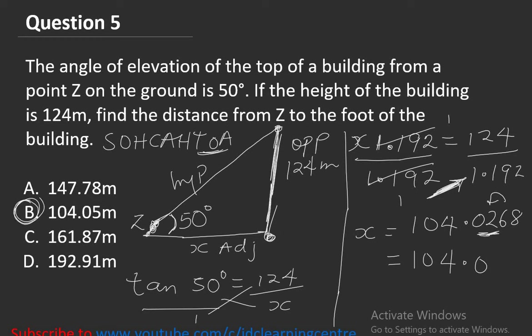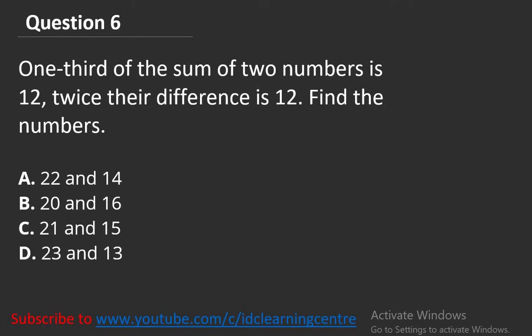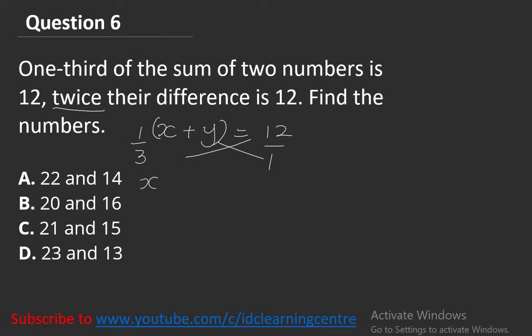Question number 6: One third of the sum of two numbers is 12. Twice their difference is 12. Find the numbers. Let the two numbers be x and y. One third of the sum: (1/3)(x plus y) equals 12. Cross multiplying: x plus y equals 36. This forms equation 1.